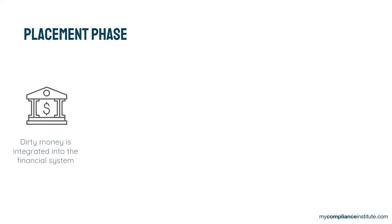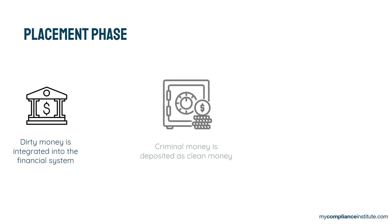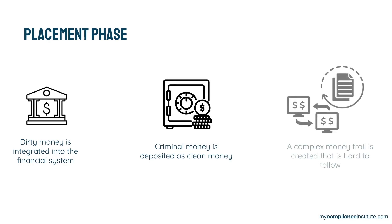Now comes the placement phase, where dirty money is integrated into the financial system. Money from the hamburger joint seems to be a legitimate source of earnings and can be placed in a bank account without much hassle. From this bank account, money can either be spent immediately, or the criminal can decide to create a money trail that is complex to follow by doing multiple follow-up transactions.